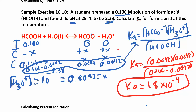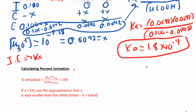In that problem, they gave us the initial concentration and the equilibrium pH, and we solved for Ka. We'll do another one where they give you the initial concentration and Ka and you solve for the equilibrium concentration — then once you know the equilibrium hydronium concentration, you can find the pH. One other thing related to this problem is percent ionization, which tells you how much the acid ionizes. The formula is: equilibrium hydronium concentration divided by the initial concentration, times 100.